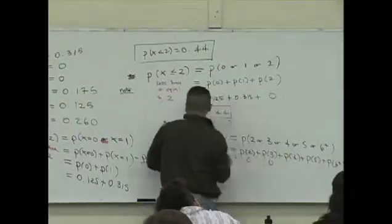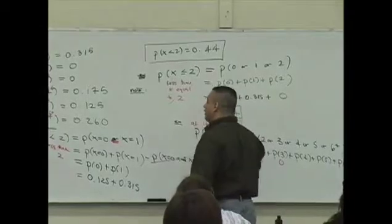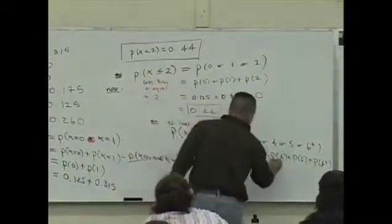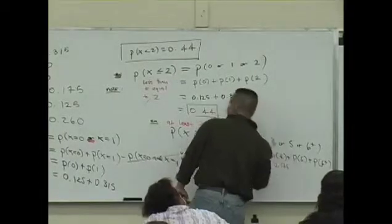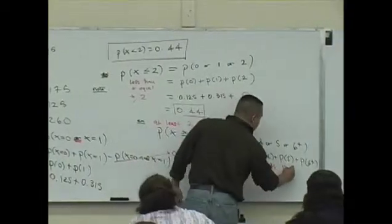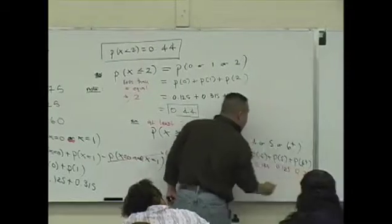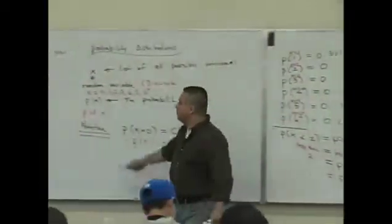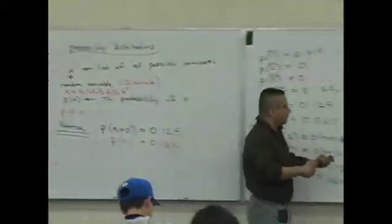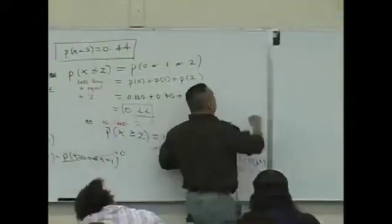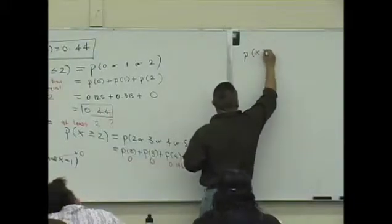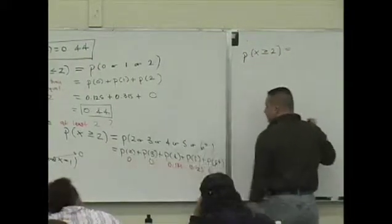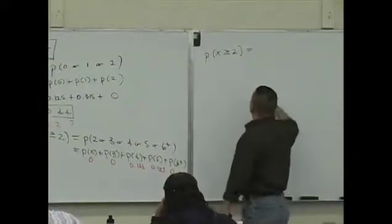Zero plus zero plus what's p of four? Is that 0.175? P of five? 0.125. P of six? 0.126. So if I add all those probabilities together, like I did before, I could deduce the answer. So the probability that a student has slept for at least two hours is going to be what value? 0.56.